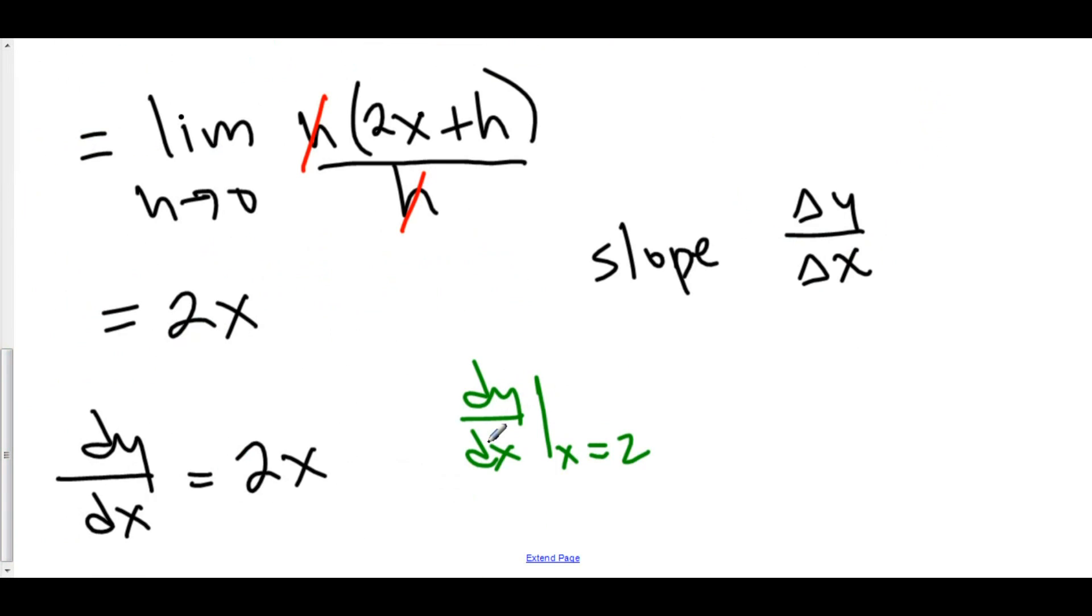If we found dy dx at x equals 2, we can plug 2 into here. 2 times 2 is 4. That means that the slope of the tangent line at x equals 2 is equal to 4.